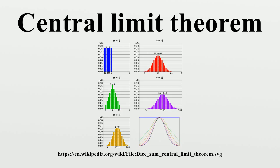In this variant of the central limit theorem, the random variables have to be independent but not necessarily identically distributed. The theorem also requires that random variables have moments of some order, and that the rate of growth of these moments is limited by the Lyapunov condition. Lyapunov CLT: Suppose x1, x2, ... is a sequence of independent random variables, each with finite expected value μi and variance σ²i. If for some δ > 0 the Lyapunov condition is satisfied, then the sum Sn converges in distribution to a standard normal random variable as n goes to infinity. In practice it is usually easiest to check Lyapunov's condition for δ = 1.